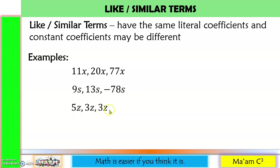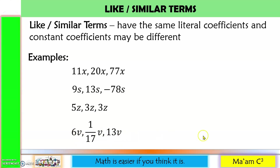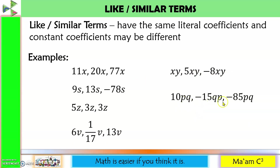5z, 3z, 3z — the constant coefficients 5 and 3 are different, but it could also be the same, like 3 and 3. For as long as the literal coefficients are the same, they are like terms. PQ and QP: yes, they are the same. The exponent of P is 1 in both, and the exponent of Q is 1 in both — they were just interchanged, but they are the same. So PQ, QP, and PQ are all like terms.